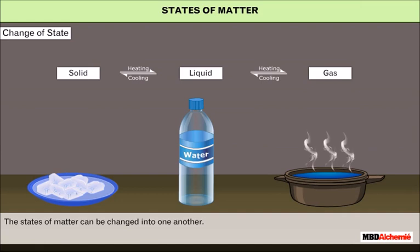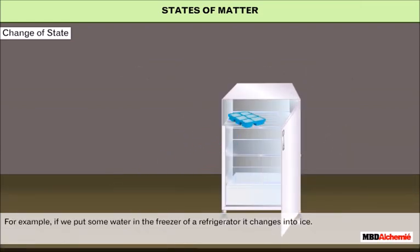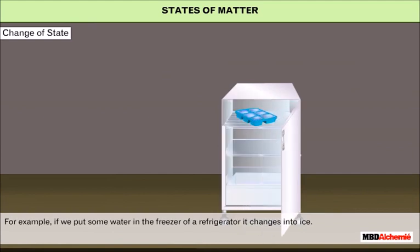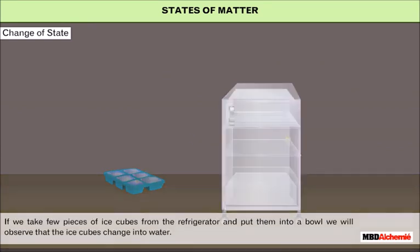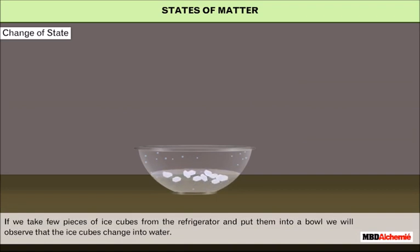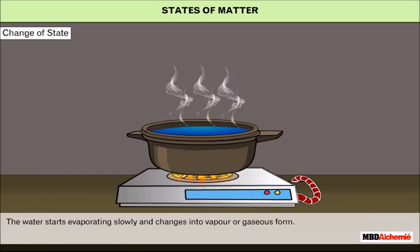The states of matter can be changed into one another. For example, if we put some water in the freezer of a refrigerator, it changes into ice. If we take a few pieces of ice cubes from the refrigerator and put them into a bowl, we will observe that the ice cubes change into water.